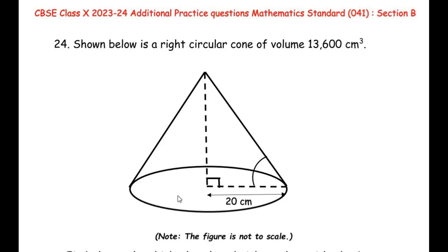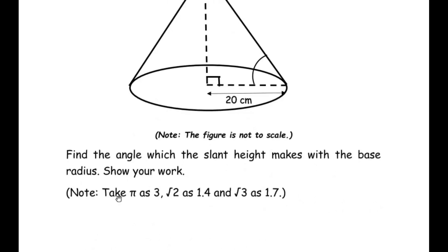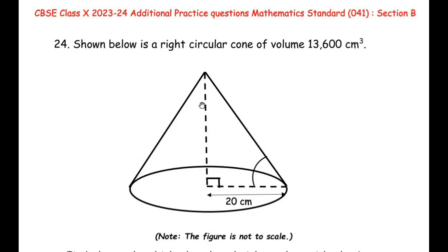The first question: shown below is a right circular cone of volume 13,600 cubic centimeter. Find the angle which the slant height makes with the base radius. Show your work. They have told us to assume these values: if we get π, replace it with 3; if we get √2, replace it with 1.4; and if we get √3, replace it with 1.7, or vice versa.